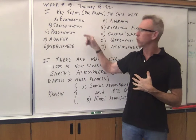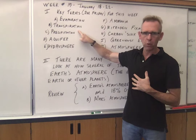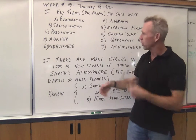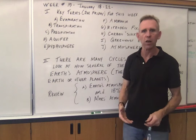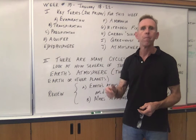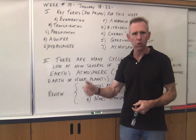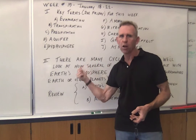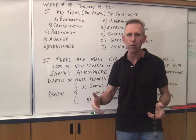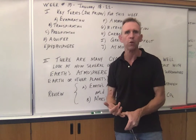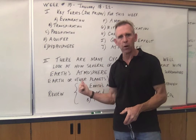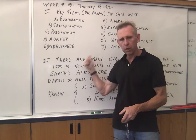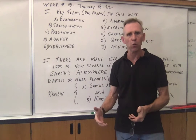Most of these should look pretty familiar to you. Evaporation — transpiration might be a new one. This is a special form of evaporation that happens with trees; this is how trees lose their water. If you check out aquifer, that goes along with the groundwater we're going to be talking about. We're in week 19 now — that's 19 weeks of notes. Previously we went through the layers of the atmosphere: the troposphere, the exosphere, and so forth.